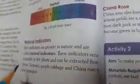What is a natural indicator? Few indicators are present in nature. These indicators occur naturally in few plants and can be extracted from them.